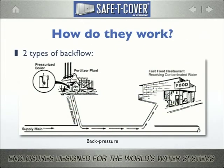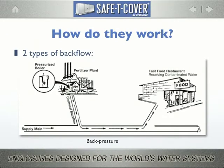Backflow happens when either or both of two events occur. The example shown here, and in the previous illustration, is back pressure. It happens when there is a higher pressure existing in the downstream piping than in the supply piping, allowing downstream substances to be pushed back into the potable water supply. Pumps, thermal expansion, and elevation are among the most common causes.